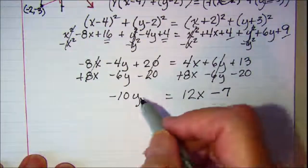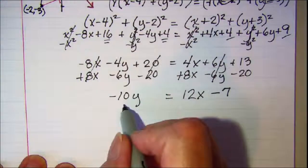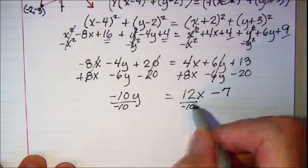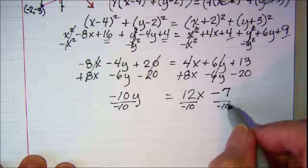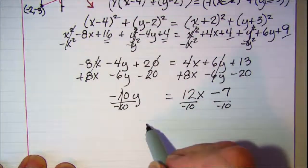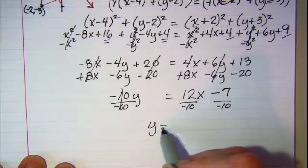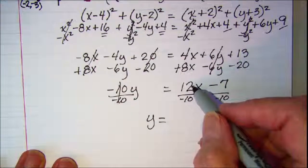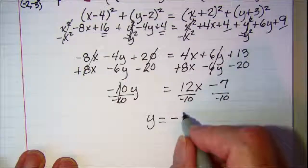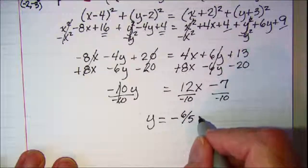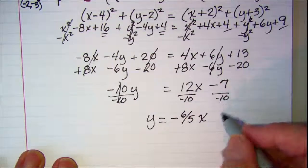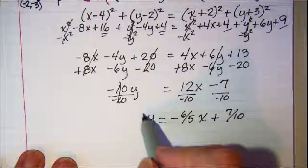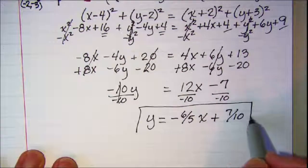For slope intercept form we need y by itself so let's divide every term by -10. So cancel and we end up with y = -6/5x + 7/10.